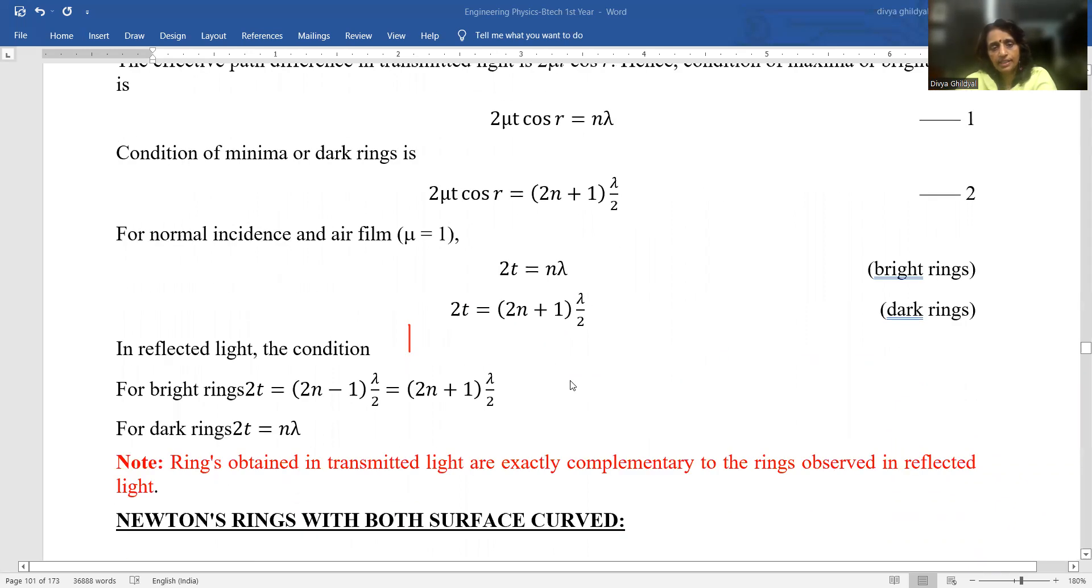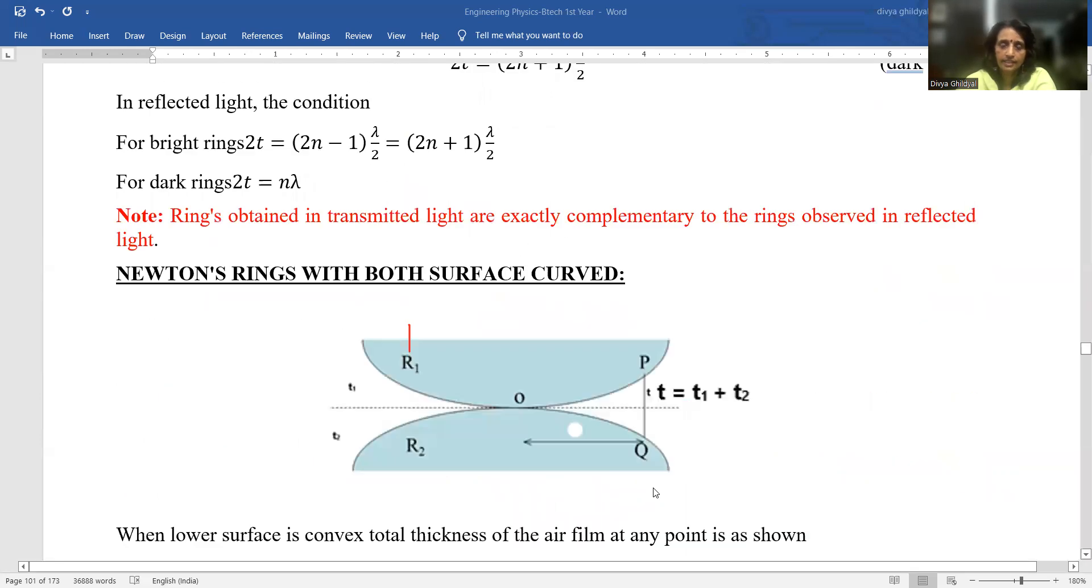Newton ring in transmitted light will be having the whole theory, procedure, concept same but the maxima minima condition will be complementary to what we observed in the reflected light.